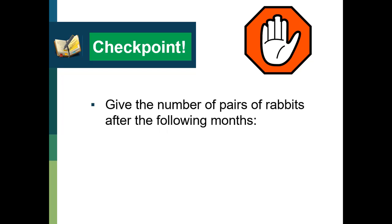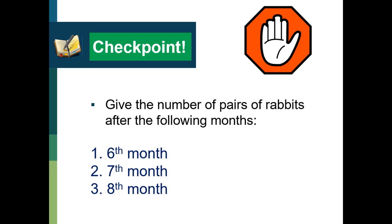Let's try to check your understanding. We have a checkpoint. Give the number of pairs of rabbits after the following months. In our illustration, we included until the fifth month — three pairs in the fourth month and five pairs in the fifth month. What about the sixth month, the seventh month, or the eighth month? You can pause this video for about two minutes to analyze carefully and come up with the correct answer, then play it again to check.